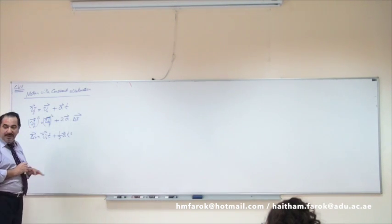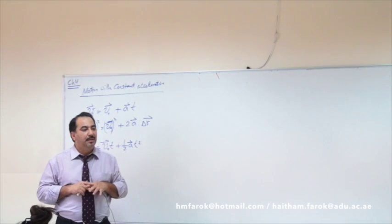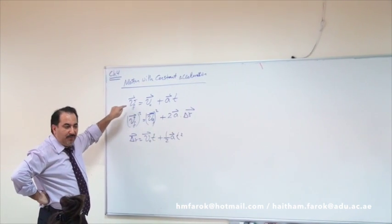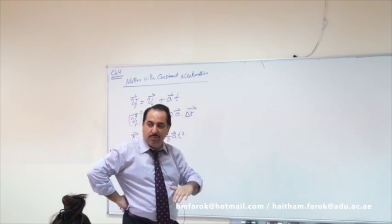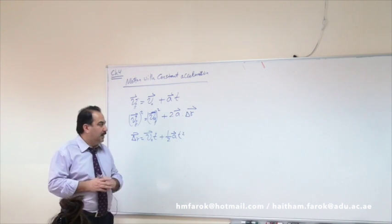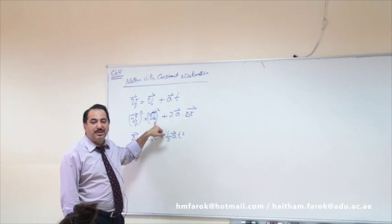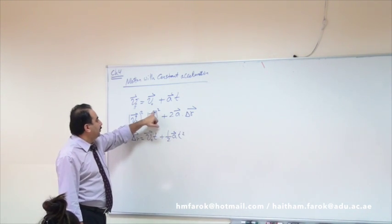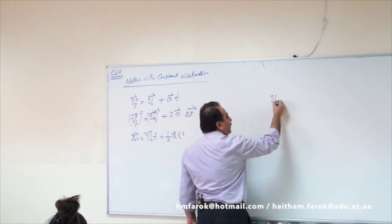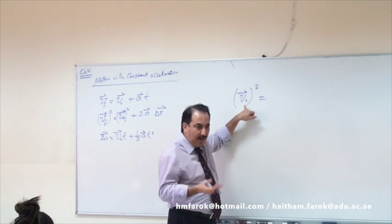We were talking about motion with constant acceleration and listed the three equations of motion for an object moving in space. I explained the meaning of the first, second, and third equations. Now I go back to the second one. If I look at the second equation, we have the initial velocity vector. We squared the vector — V₀ vector squared means this vector is multiplied by itself.